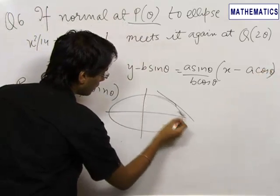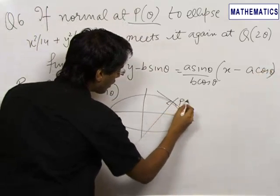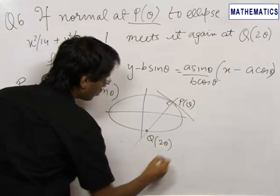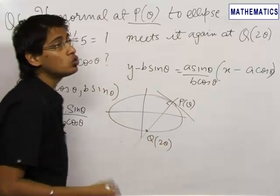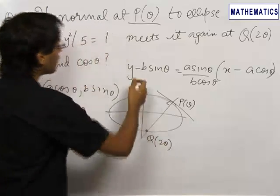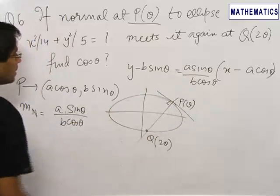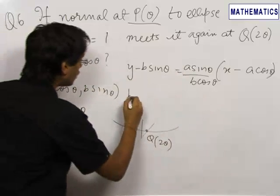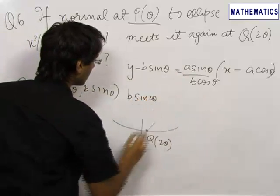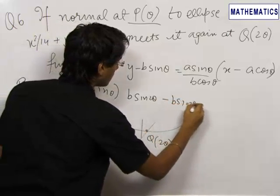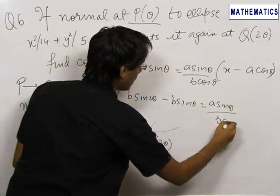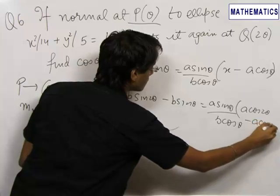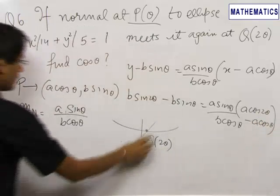This is the tangent and this is the normal. If this is point P with parameter θ, it is meeting the ellipse again at point Q with parameter 2θ, hence (a cos2θ, b sin2θ) are the coordinates of point Q, which satisfy the equation of the normal made at point P. Hence putting y equals b sin2θ and x equals a cos2θ, we get this equation.